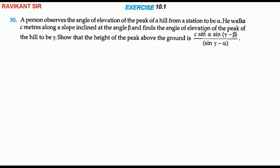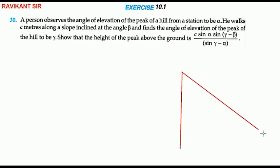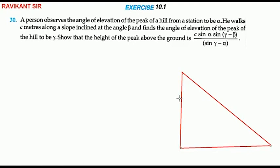यह हमें prove करना है। तो चलिए पहले हम लोग इसका diagram बना लेते हैं। यहाँ पर hill है। इसके peak को ground से angle of elevation कितना दिया हुआ है? alpha दिया हुआ है। यहाँ से angle of elevation alpha है।